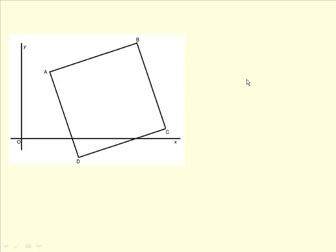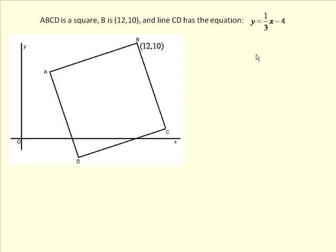Hi, and welcome to another video about finding equations of straight lines. In this situation, ABCD is a square, the point B is (12,10), and the line CD, this one at the bottom here, has the equation y = (1/3)x - 4.